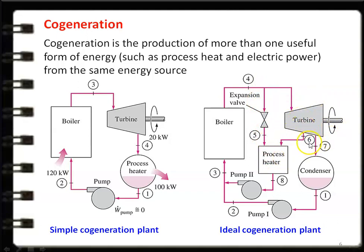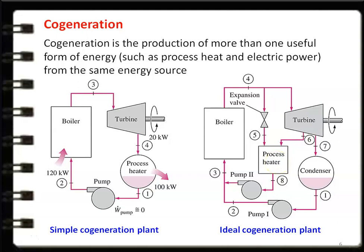In the steam turbine, a small amount of steam is extracted at condition 6 and given to the process heater. The exhaust steam from the turbine goes to the condenser, where it is condensed and recirculated back to the boiler through pump 1. The advantage of the ideal cogeneration plant is that depending on requirements, we can regulate the valve: to produce more power, more steam goes to the turbine and less to the process heater; to produce more process heat, more steam goes to the process heater and less to the turbine.